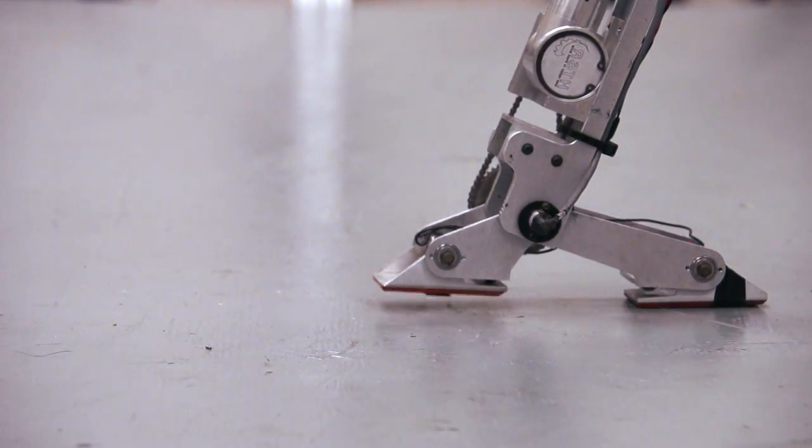So if you look at when we take a step, we always come in and take a heel strike, we put our toe down and we push off with our back foot. Amber 2 can do the same thing.